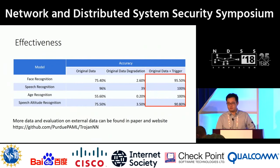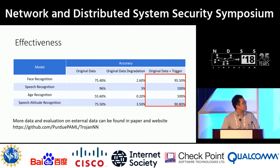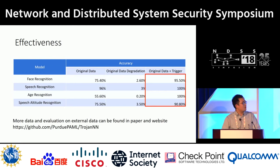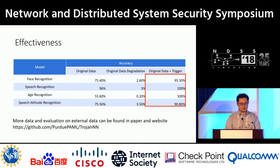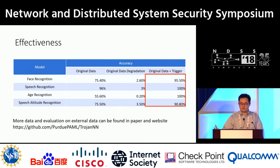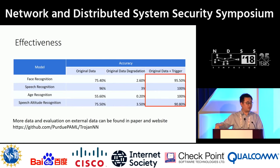I have a question. On the original data, the accuracy for speech recognition is 75% and the original data degradation is 3.5%, but on the original plus trigger data, the accuracy is much higher at 90% — why is that? Because with the trigger, all data will be recognized as one specific result. It's basically: as long as the input has this feature, it gets recognized as that one classification label. But the original task is much more difficult — it considers all the different features to do the recognition.